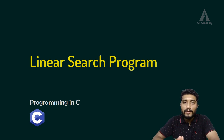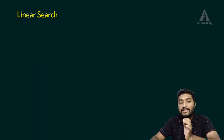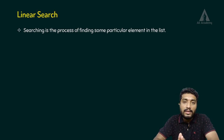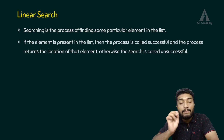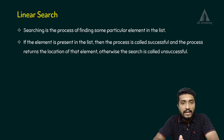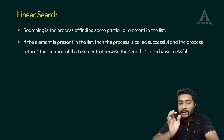Hi, in this lecture we are going to discuss the linear search program. In linear search, we search for a particular element in a particular list. If the element is present, the process is called successful and the process returns the location of that element. Otherwise, the search is called unsuccessful.